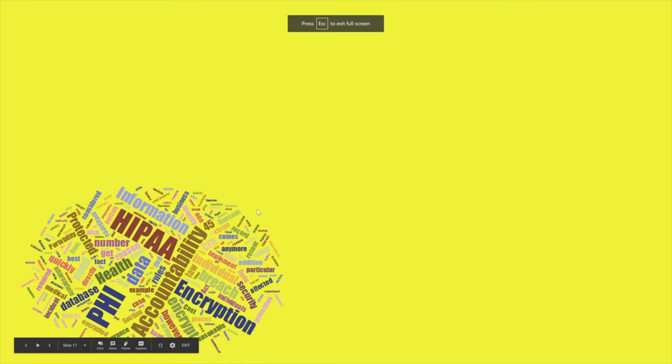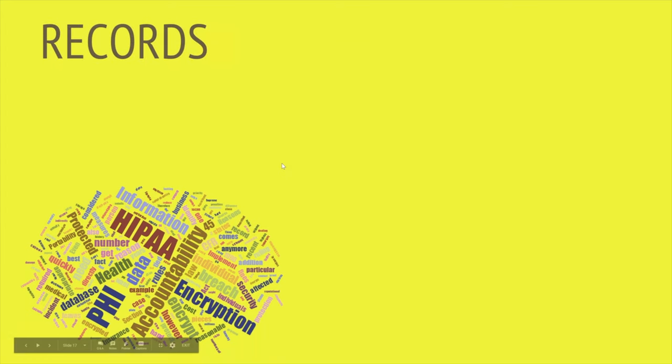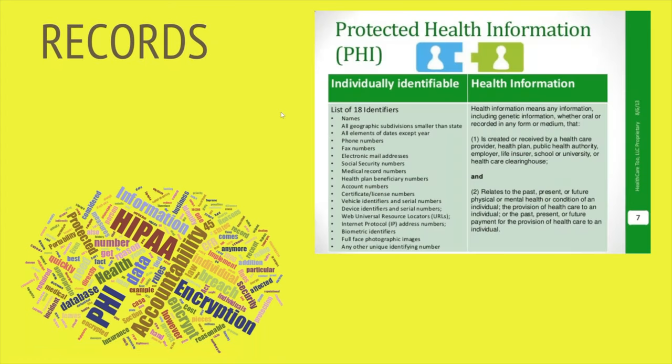Now let's talk about these records. Documentation occurs and records must be filed. The Protected Health Information Act discusses how individually identifiable health information must be protected, such as names, phone numbers, fax numbers, social security numbers, medical record numbers, account numbers, and so on. Make sure you are protecting the client's information and that all records are stored properly.